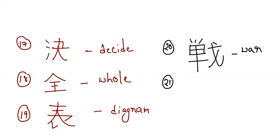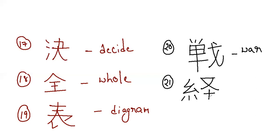This is the kanji for pass through. It has nine strokes: one, two, three, four, five, six, seven, eight and nine. This is the kanji for pass through.